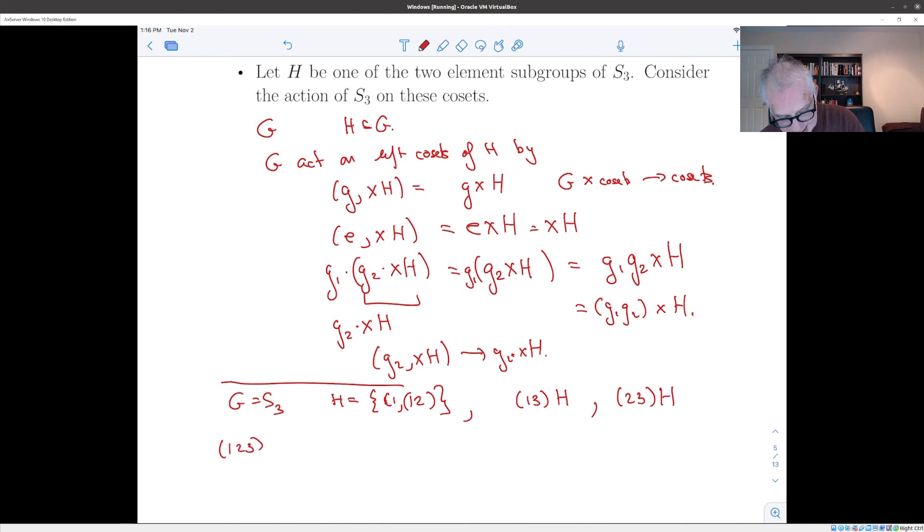And now if you want to know how does a cycle like (1, 2, 3) act, well (1, 2, 3) applied to H is (1, 2, 3)H. Well, which of these cosets is (1, 2, 3)H? I guess we should work this out. (1, 3)H is the same as (1, 3) times (1, 2), which is (1, 3, 2).